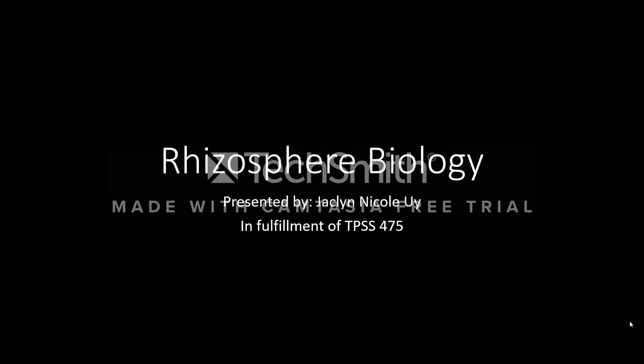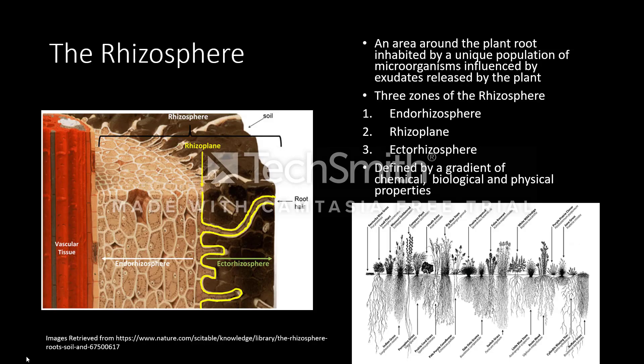The rhizosphere, or otherwise known as the root zone of influence, is a narrow portion of soil about a few millimeters wide. It is inhabited by a unique population of microorganisms, often influenced by chemicals released by the roots. The rhizosphere is composed of three zones.